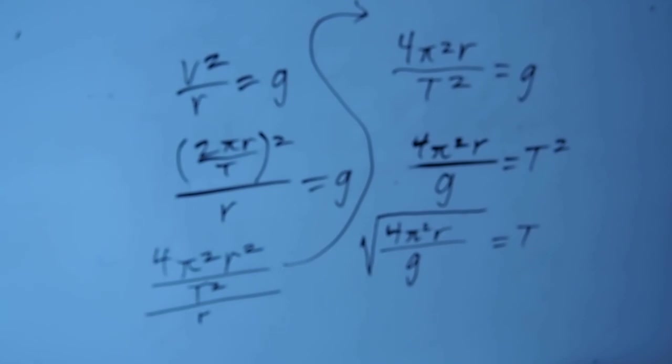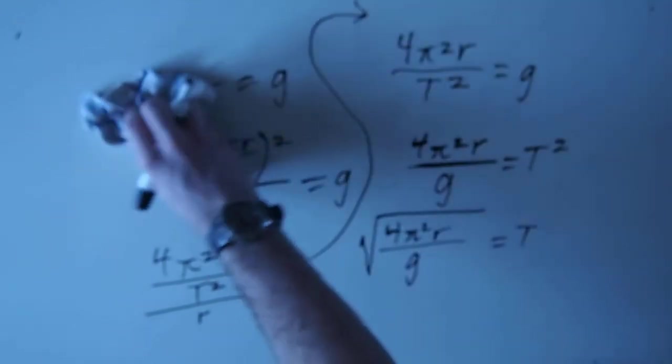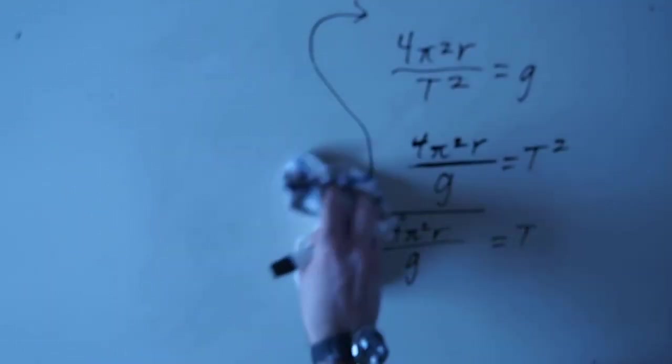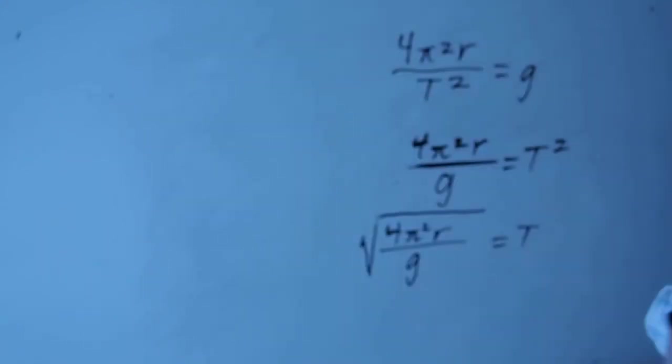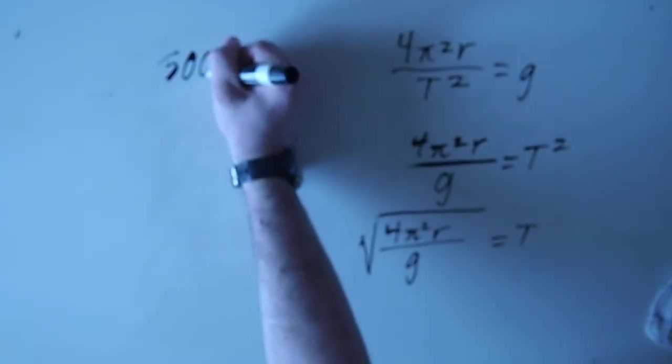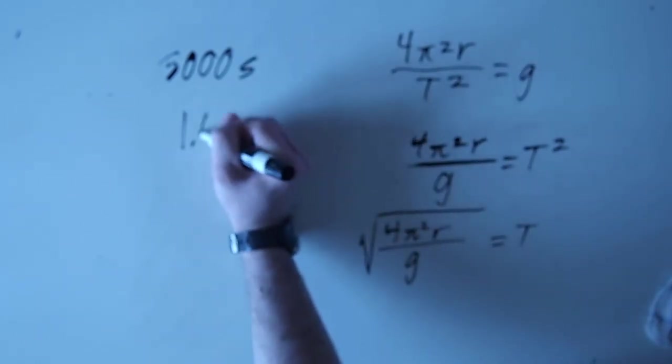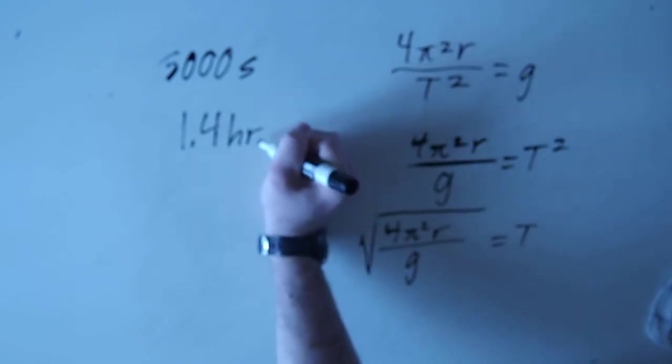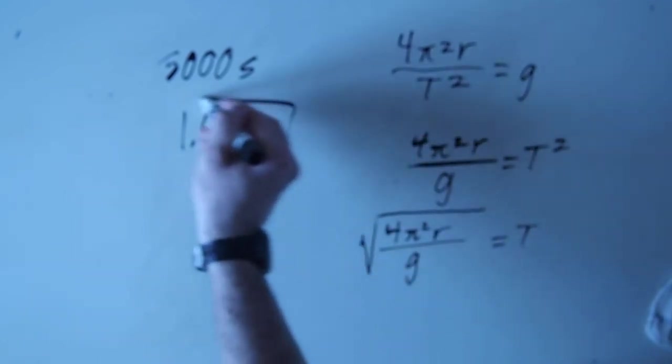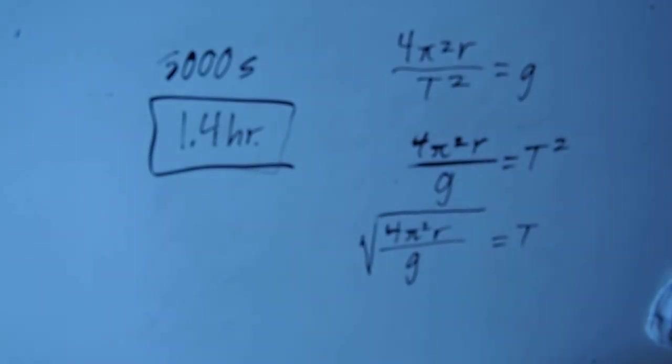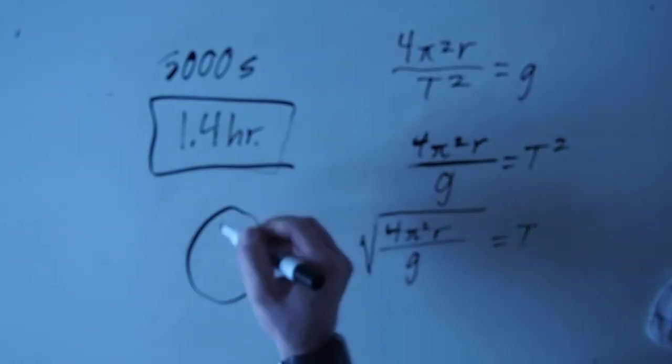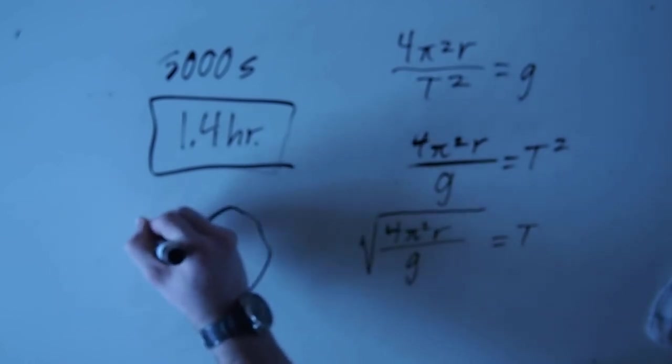And when you solve that, you get about 5,000 seconds. Convert that back into hours, you get about 1.4 hours. So, if the Earth rotated any faster than this, objects at the equator would just fly off into space.